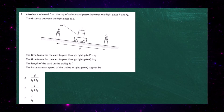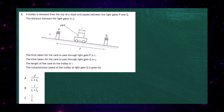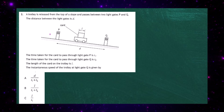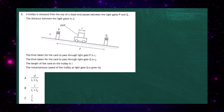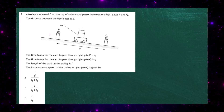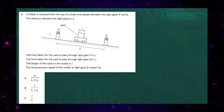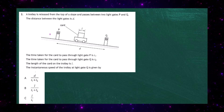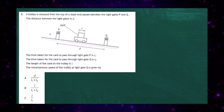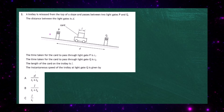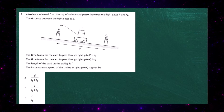Question two. A trolley is released from the top of a slope and passes between two light gates P and Q. The distance between the light gates is d. The time taken for the card to pass through light gate P is t1, and the time taken to pass through light gate Q is t2. The length of the card on the trolley is l.